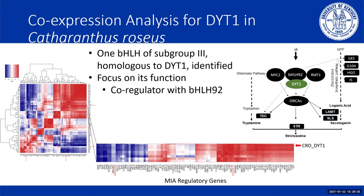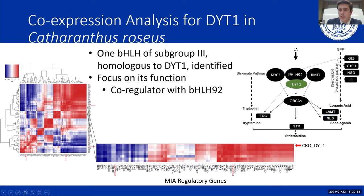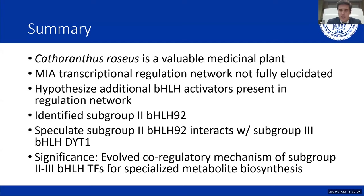Therefore, with DYT1 in mind, we identified a subgroup three bHLH homologous to DYT1 in Catharanthus. My focus will be on its function and how it co-regulates with BHLH92. Co-expression analysis data shows it does interact with many MIA regulatory genes in the MIA biosynthesis pathway. I have updated the proposed model with DYT1 required for co-activation of downstream target genes. In summary, Catharanthus is a valuable medicinal plant, and we hypothesize that subgroup two BHLH92 interacts with subgroup three DYT1 — suggesting Catharanthus has evolved a co-regulatory mechanism of subgroup two and three bHLH transcription factors for specialized metabolite biosynthesis.